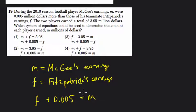Take Fitzpatrick's, add more to his salary, and you get McGee's. Or we could write McGee's minus $0.005 and that's Fitzpatrick's. Okay, so the two players earned a total of $3.95 million.